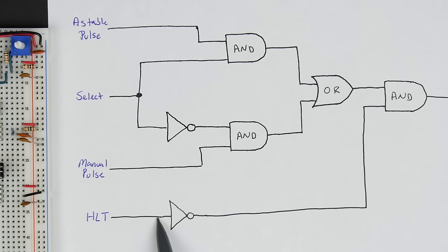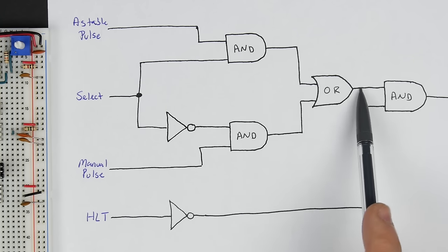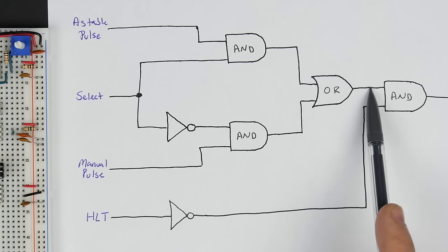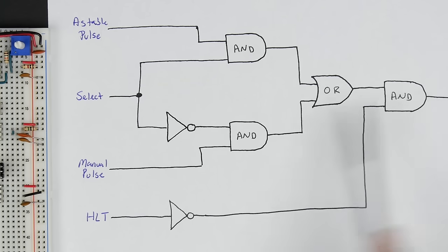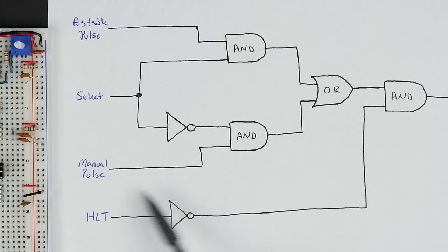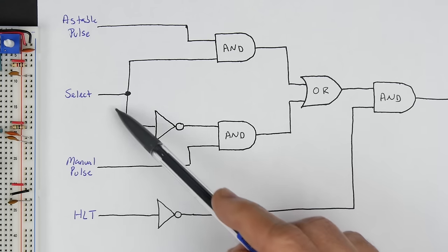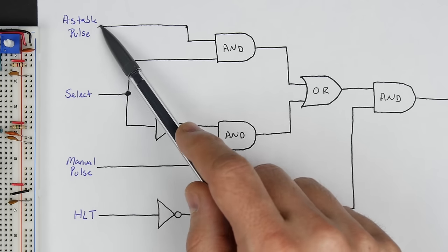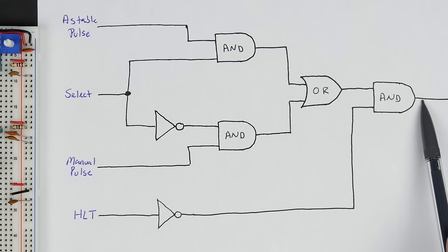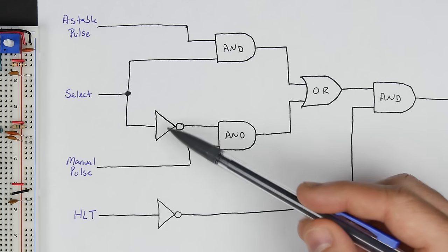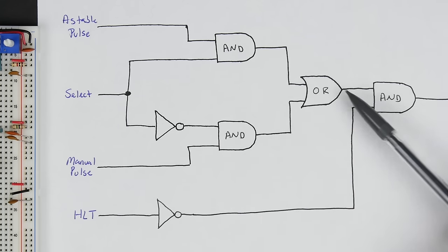The halt signal is normally low, so we invert it and get a 1, and that 1 is ANDed with our clock — whether it's manual or automatic — and comes out. But when the halt goes high, because the program wants to halt execution, the inverted signal goes low, and the final AND gate output is always going to be 0. So there will be no clock no matter whether you've got it in manual mode or using the oscillator. You're going to get nothing out there until we reset the computer or restart the program.